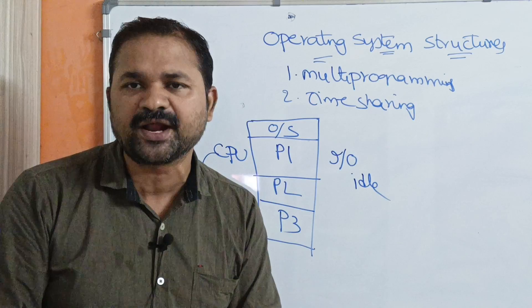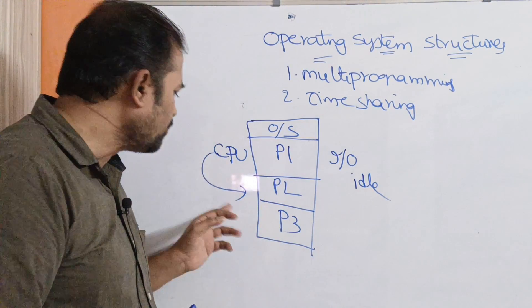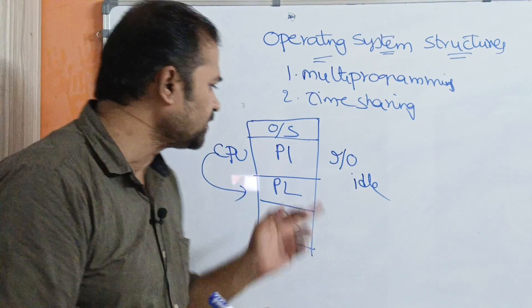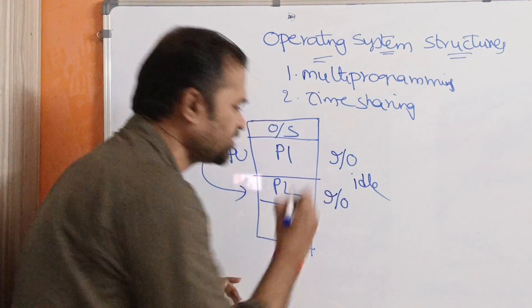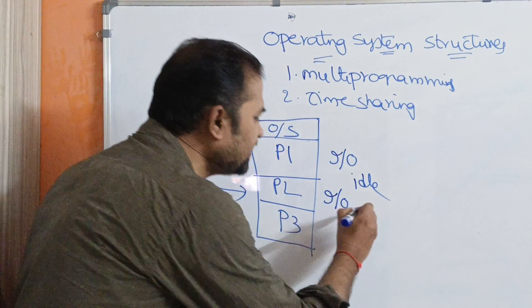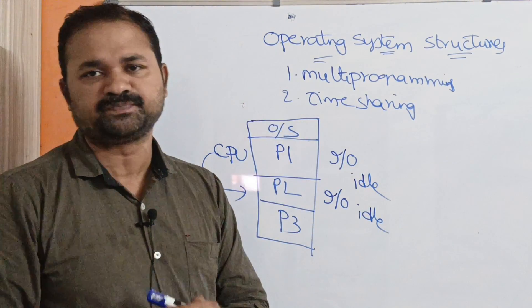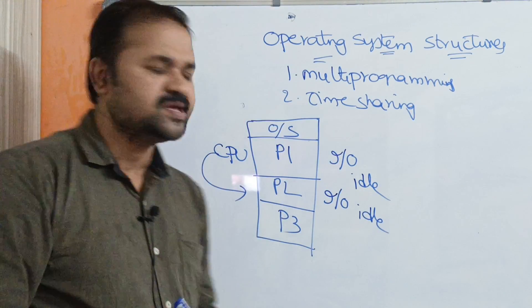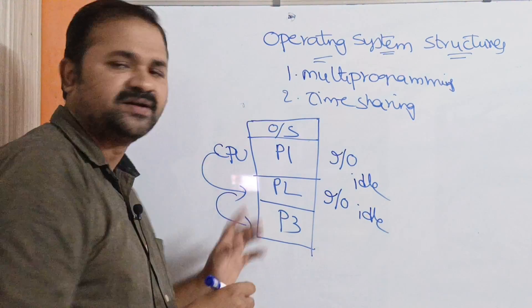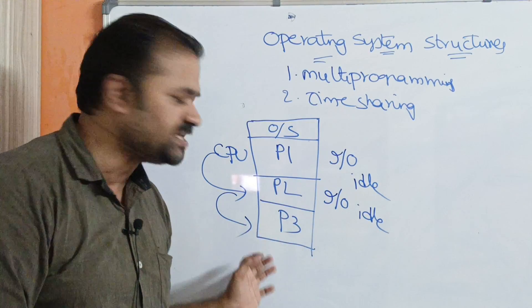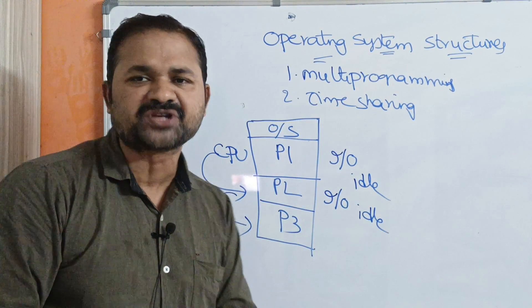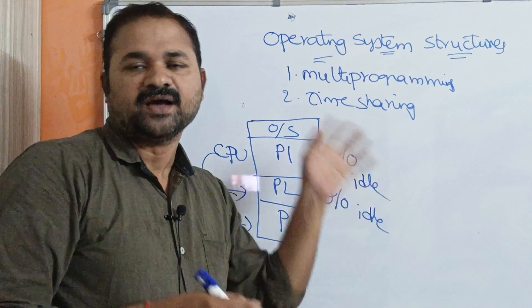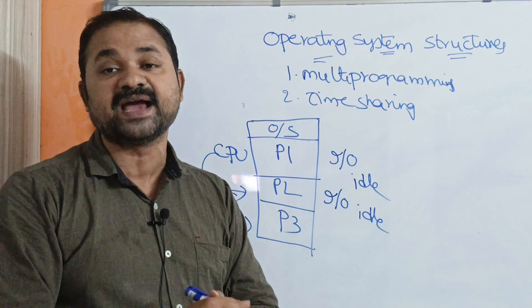So now CPU will start executing process P2. Assume that P2 also needs some I/O operation, so during that time CPU will be idle again. The operating system will allocate CPU to some other process. Assume that operating system allocated CPU to P3, so now CPU starts executing P3. Likewise, all the processes are executed concurrently and simultaneously.